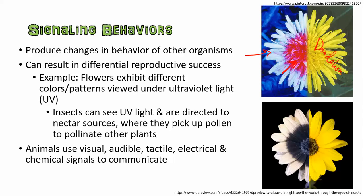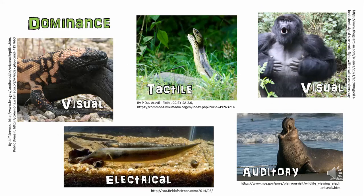You can see some really interesting patterns when you look at flowers under UV light. Animals use a number of different types of signals to communicate: visual, audible, tactile, electrical, and chemical. We're going to look at some examples of each. They can use these traits to try to indicate dominance. For example, this visual cue from a gila monster — those bright orange stripes indicate dominance so that if other males come to its territory, it can signal 'you don't want to mess with me.' This tactile expression of dominance is basically two male snakes wrestling — when one is defeated, it loses its dominant position.